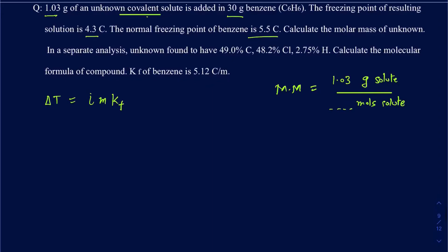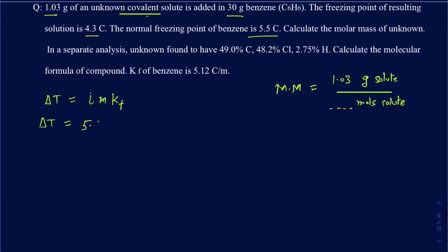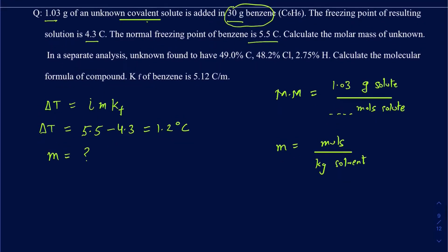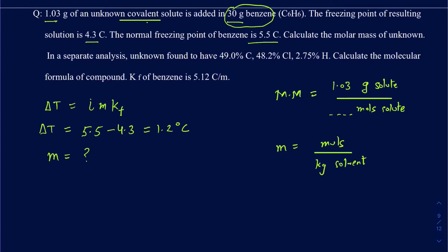Let's look at what these values are going to be. Delta T is the difference between the normal freezing point and the freezing point of the resulting solution: 5.5 minus 4.3, which gives you 1.2°C. The m (molality) is what we're trying to figure out, because once you have the molality you can figure out the moles since you know how much solvent you're using. Remember, molality is moles divided by kilograms of solvent. So go ahead and rearrange — molality equals delta T divided by i times Kf.